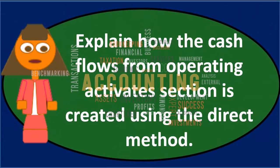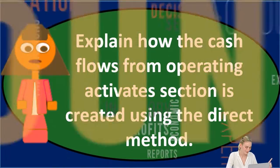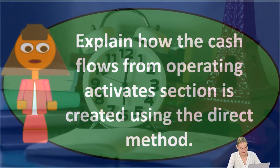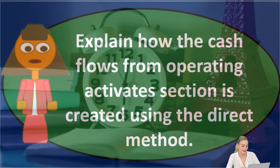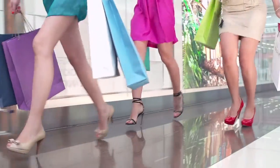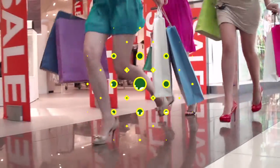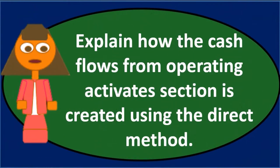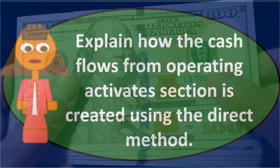The direct method takes the income statement and converts each line item — revenues and expenses — from an accrual basis to a cash basis. So revenue on an accrual basis becomes 'cash received from customers.' Cost of goods sold on the income statement becomes 'cash paid for inventory.' Any other expenses on the income statement on an accrual basis get converted to something like 'cash paid for expenses.' That makes intuitive sense.